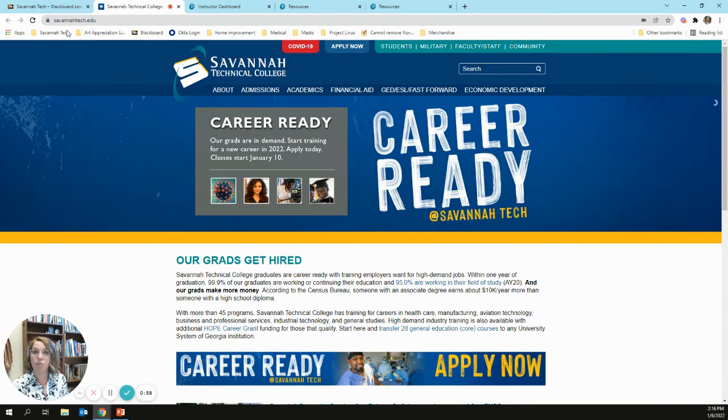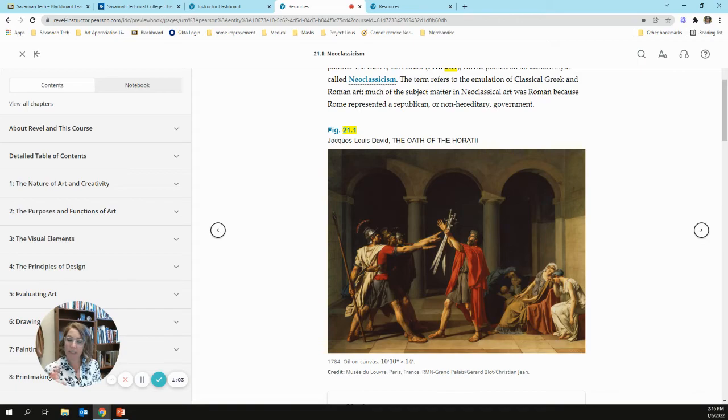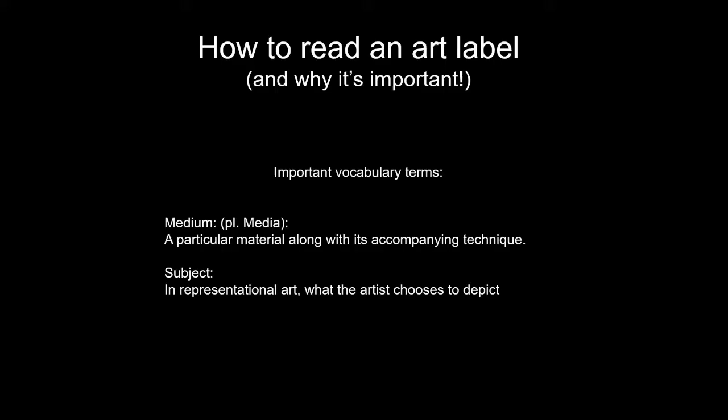I'm going to minimize myself and pull up your textbook and this presentation that I've made. How to read the label for a work of art and why it's important. The two most important terms on your first test are medium and subject. Medium means what the art is made of — the materials and technique used to create the work of art. Subject is, simply put, what a work of art is depicting.